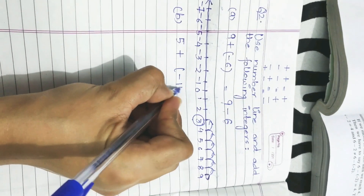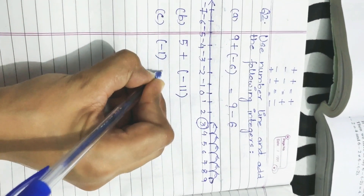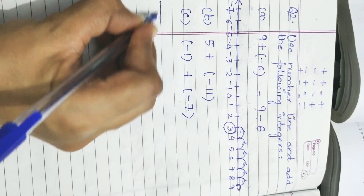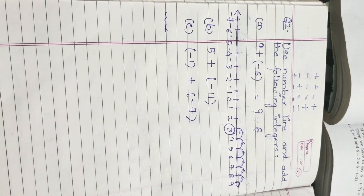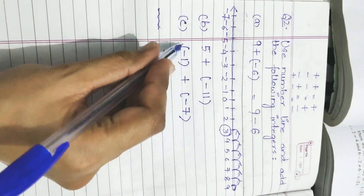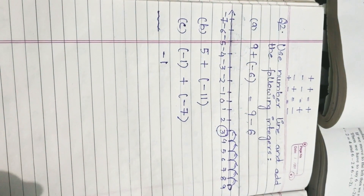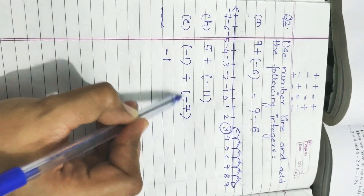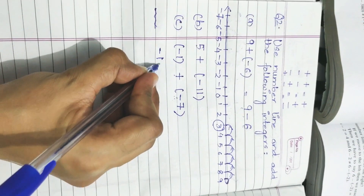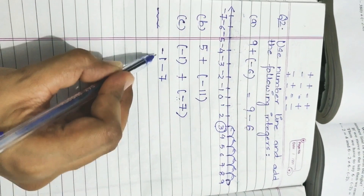Part B — 5 plus minus 11 — is your homework. Please try to solve it at home. Now let us come to part C, which is minus 1 plus minus 7. Before going to the number line, let us first convert it into one operation. The first integer minus 1 is written as minus 1 since there is no operation before it. The two operations plus minus together become minus, so the expression becomes minus 1 minus 7.